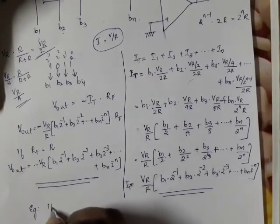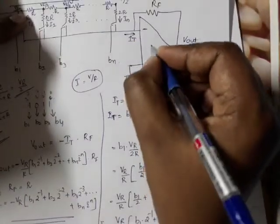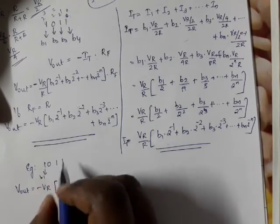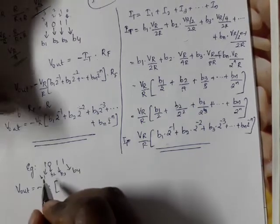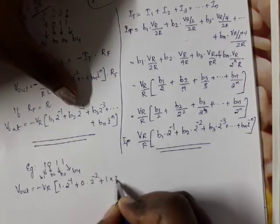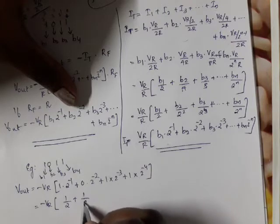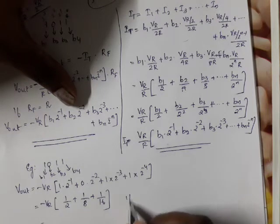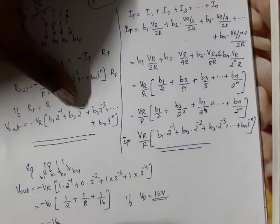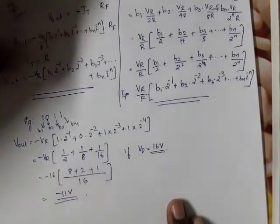Example: digital input is 1011, so B1=1, B2=0, B3=1, B4=1. Applying the Vout equation: Vout = minus VR × (1×2^(−1) + 0×2^(−2) + 1×2^(−3) + 1×2^(−4)) = minus VR × (1/2 + 0 + 1/8 + 1/16). If VR equals 16 volts: Vout = minus 16 × (8+0+2+1)/16 = minus 11 volts.